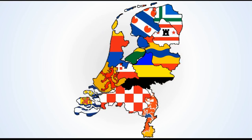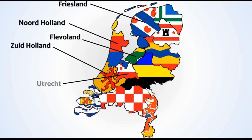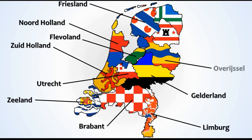Now the Netherlands have quite a few provinces, and these provinces are as follows: you have Friesland, Noord-Holland, Flevoland, Zuid-Holland, Utrecht, Zeeland, Brabant, Limburg, Gelderland, Overijssel, Drenthe, and Groningen.